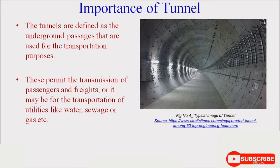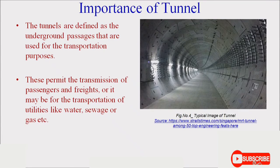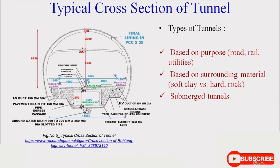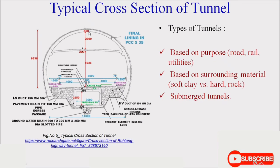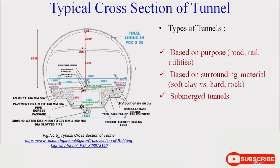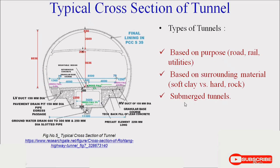Tunnels are also very important to make possible ways of transportation. They permit transportation of passengers and freight, or transportation of utilities like water, sewage, or gas. This figure shows the typical cross section of a tunnel. To construct a tunnel, you first drill into the hill, then provide all facilities for drainage and electricity, and provide stability to the tunnel by lining with PCC — plain cement concrete. Tunnels are classified based on purpose, based on surrounding material, and as submerged tunnels.